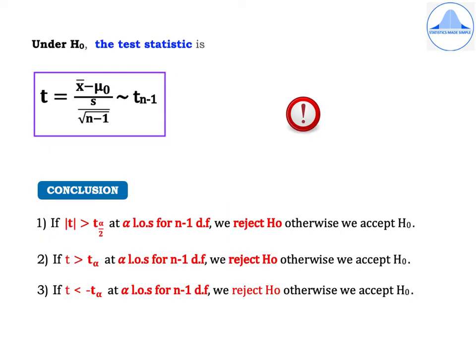Under H0 the test statistic is t equal to x bar minus mu0 divided by s by root n minus 1, which follows t n minus 1. Note that it is small s which stands for the sample standard deviation, and we know that t is the student's t variate which is explained under theoretical distributions.